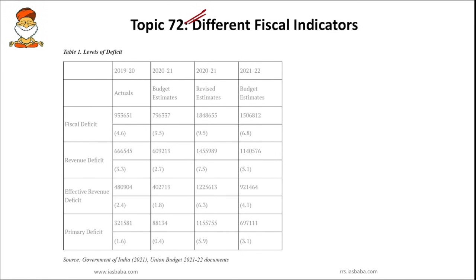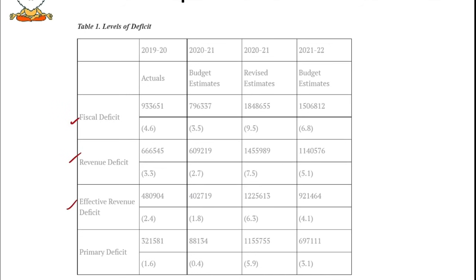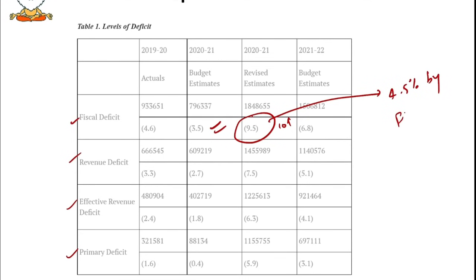The next important topic is fiscal deficit and different fiscal indicators. From the table, there are different fiscal indicators such as fiscal deficit, revenue deficit, effective revenue deficit, and primary deficit. The government in the revised estimates for 2021-22 had forecasted a higher fiscal deficit of 9.5% of GDP — more than a 100% jump from the budget estimate of 3.5% for the current fiscal. If extra budgetary resources were also taken into account, the deficit would have ballooned to over 10%. The government is targeting to bring down the fiscal deficit from 9.5% to 4.5% by fiscal year 2026.